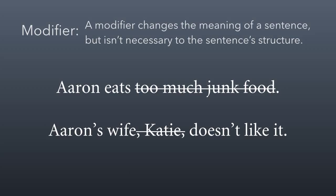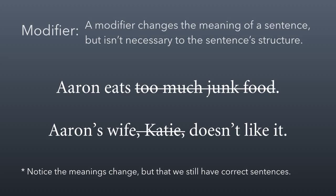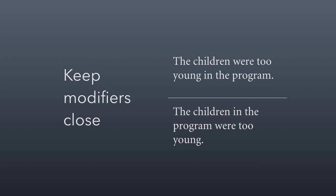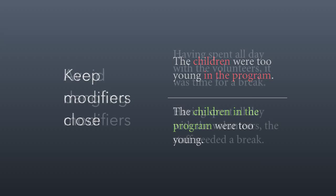This brings us to a few important rules about modifiers. The first is: keep modifiers close. In the sentence 'the children were too young in the program,' 'in the program' modifies the word 'children,' but by separating them it makes the sentence confusing. We improve it by bringing the modifier close to the word being modified: 'the children in the program were too young.' We pull that modifier right up next to the word it modifies.